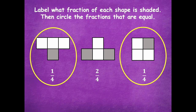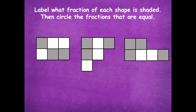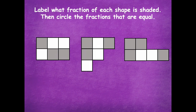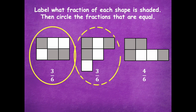Let's look at another example. Label what fraction of each shape is shaded, then circle the fractions that are equal — pause the video, label the fractions, and click play when you're ready. Alright — my first shape is three sixths, the middle shape is also three sixths, and the last shape is four sixths. The two fractions that are equal are three sixths and three sixths. The shapes look different but they end up having the same fraction.